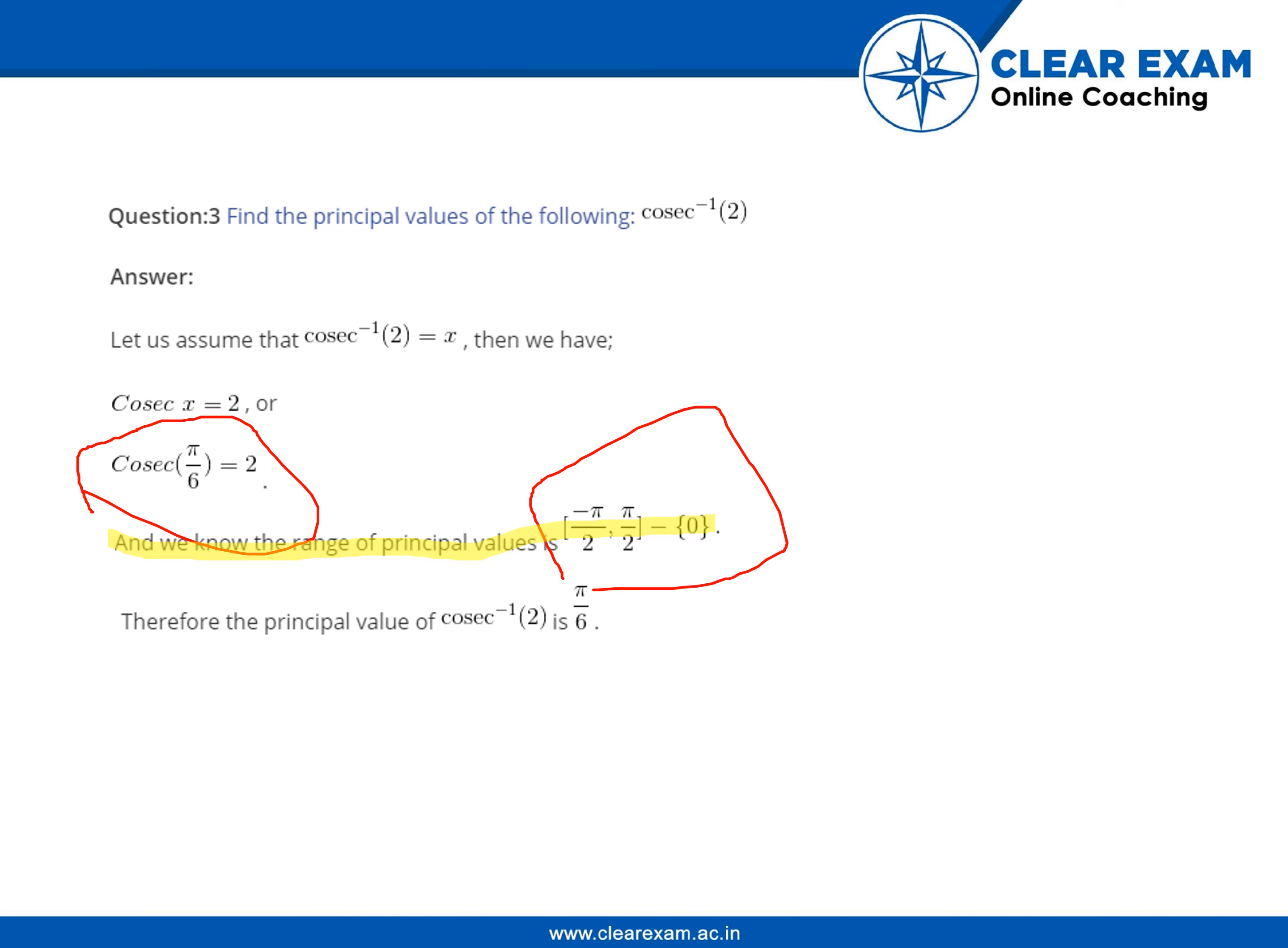Therefore, the principal value of cosec inverse 2 will be pi by 6. Over here we got it right. See this one. Thank you.